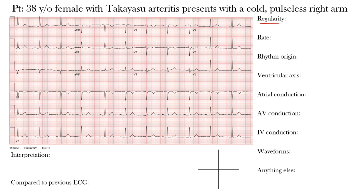Next we have heart rate, where we simply determine the rate of the rhythm. Then we look at the rhythm origin — where is the rhythm starting from within the heart. Then we determine the ventricular or QRS axis, which can help with our differential diagnosis. After that, atrial, atrioventricular, and intraventricular conduction — looking at normal or abnormal conduction anywhere in the heart. Then we look at the waveforms, including all waves, segments, and intervals. Lastly, anything else we've missed, including R wave progression and the transitional zone in the precordial leads.